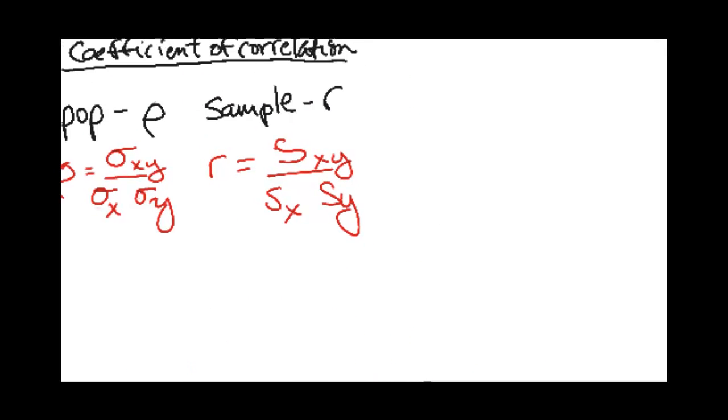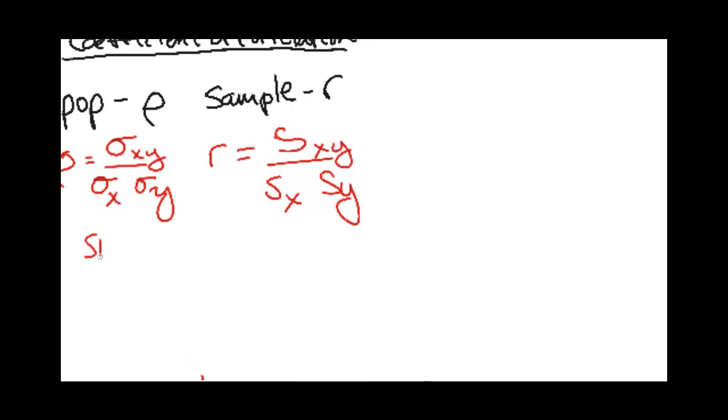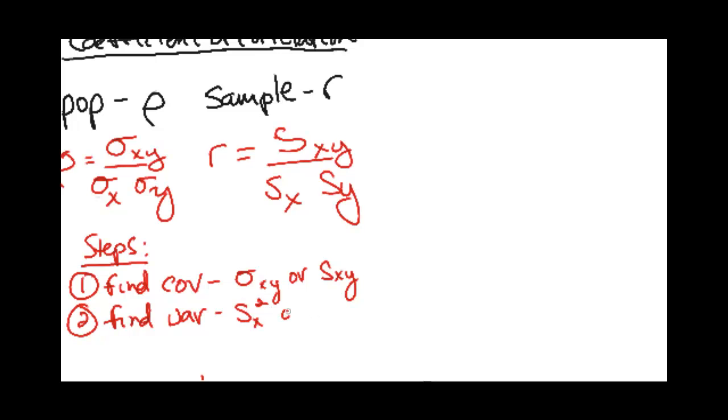The steps. One: find covariance, whether it's sigma XY or SXY. Two: find individual variances, either SX squared or SY squared.